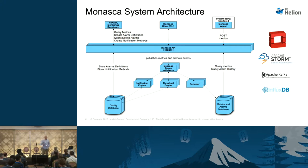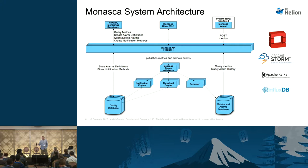We use Apache Kafka as our message queue. Most people are familiar with RabbitMQ in the OpenStack community. Kafka was developed by LinkedIn — it's highly performant, scalable, fault-tolerant, and a durable message queue. It can handle millions of messages per second in a completely durable way. Those metrics end up in our message queue, and then we have several components. The first component is our persister — it consumes metrics from the message queue and publishes them to our metrics and alarms database.